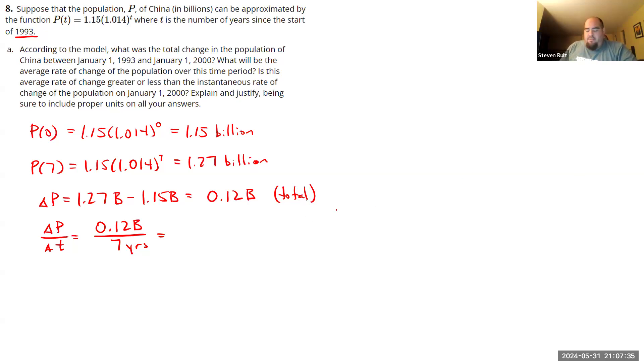So what does that come out to be? Actually, let's represent this another way. So 0.12 divided by 7. And instead of expressing this in billions, I am going to express this in millions just to make the numbers a little bit easier to think about. So this comes out to be 0.01714 billion people per year, or if you prefer, 17.14 million people per year.